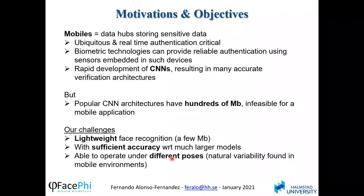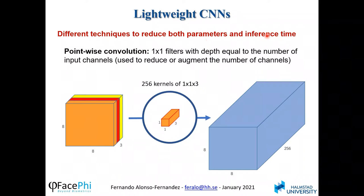There are different techniques to reduce parameters and inference times in CNNs. One technique is the use of pointwise convolution, which involves the use of 1×1 filters with depth equal to the number of input channels. In this example, we have a depth of 3. If we apply a filter of 1×1×3, we generate the output. If we apply 256 filters, we generate an output with 256 channels.